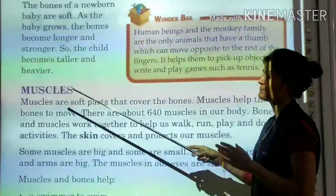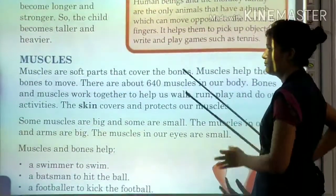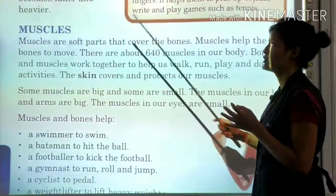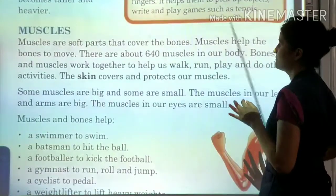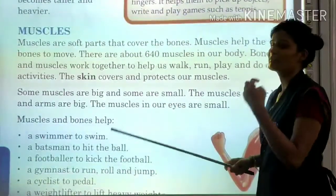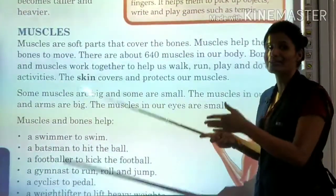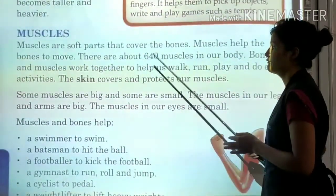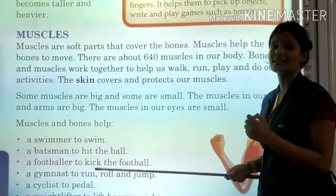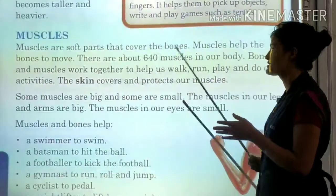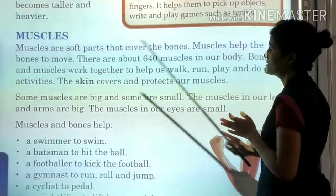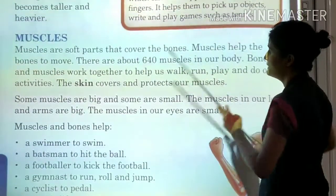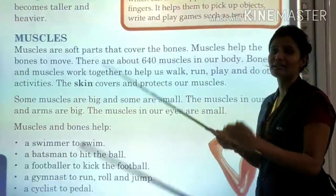Next, muscles. Muscles are the soft part that covers the bones. Bones are hard and muscles are soft. Muscles also cover the bones and help the bones to move. How do the bones move? With the help of muscles. Bones and muscles work together to help us walk, run, play, and do other activities.